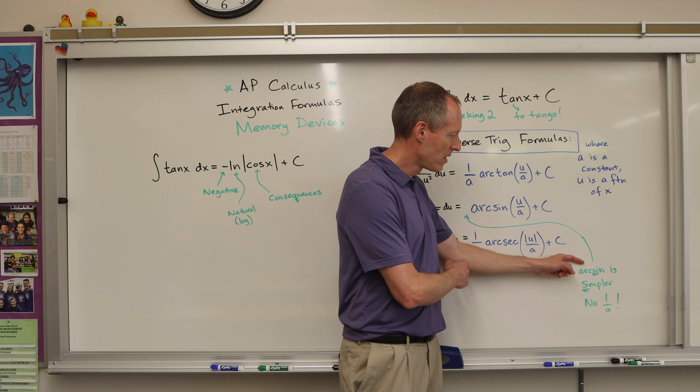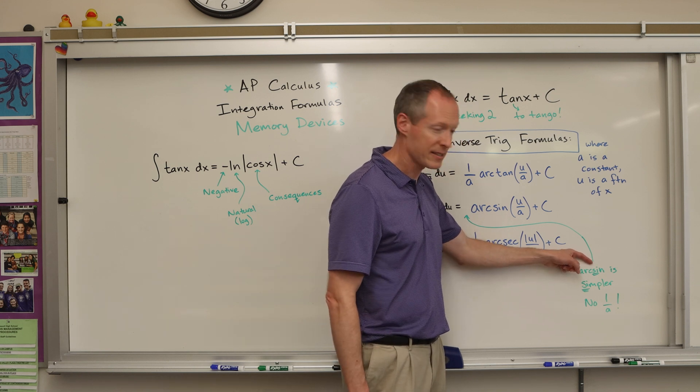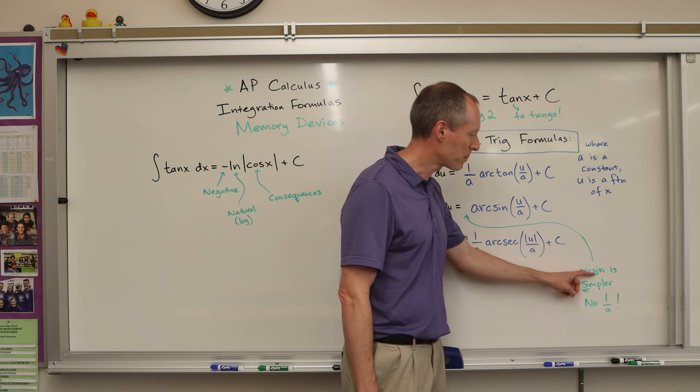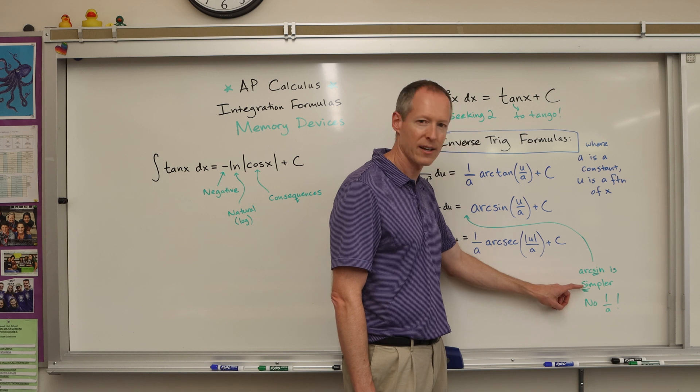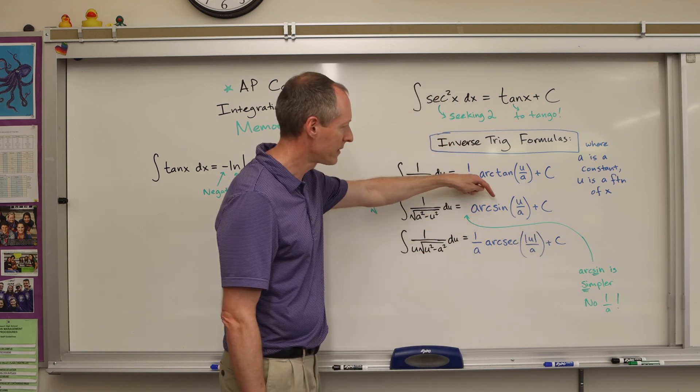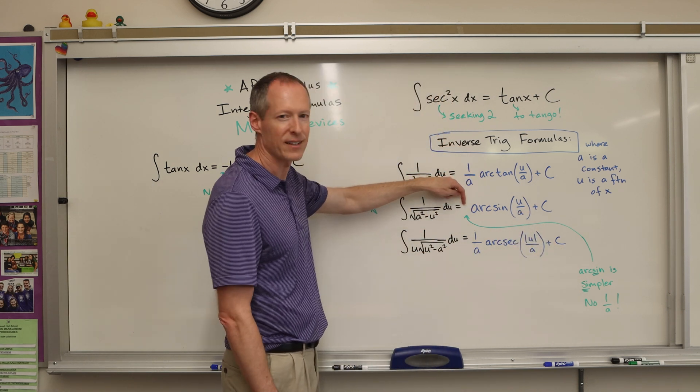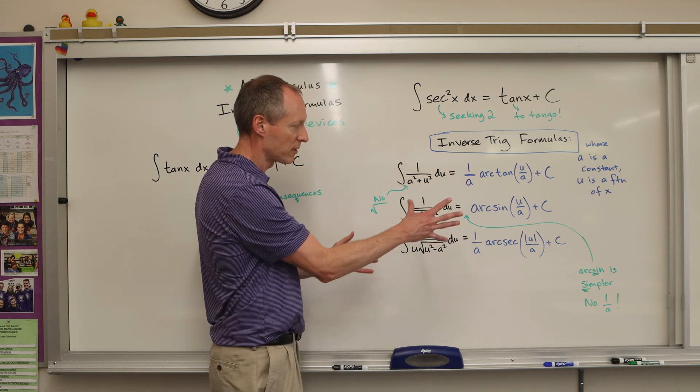So the one of these inverse trig integral formulas that doesn't have one over a is arc sine. So here's the memory device. Arc sine si is simpler than all the others. Arc sine is simpler because it doesn't have the one over a. The formula looks less complicated.